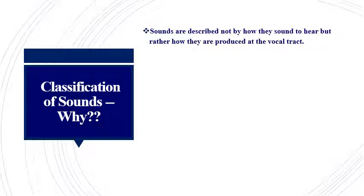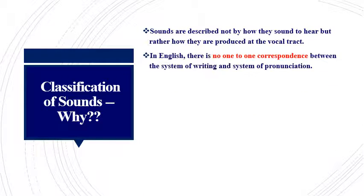Now the question is: we have the two broad categories — vowels and consonants — so why is subclassification needed? It is a general fact that sounds are described not by how they sound to the ear, but rather by how they are produced at the vocal tract. In English it is especially important to focus on the production and articulation of sounds, because there is no one-to-one correspondence between the system of writing and the system of pronunciation.